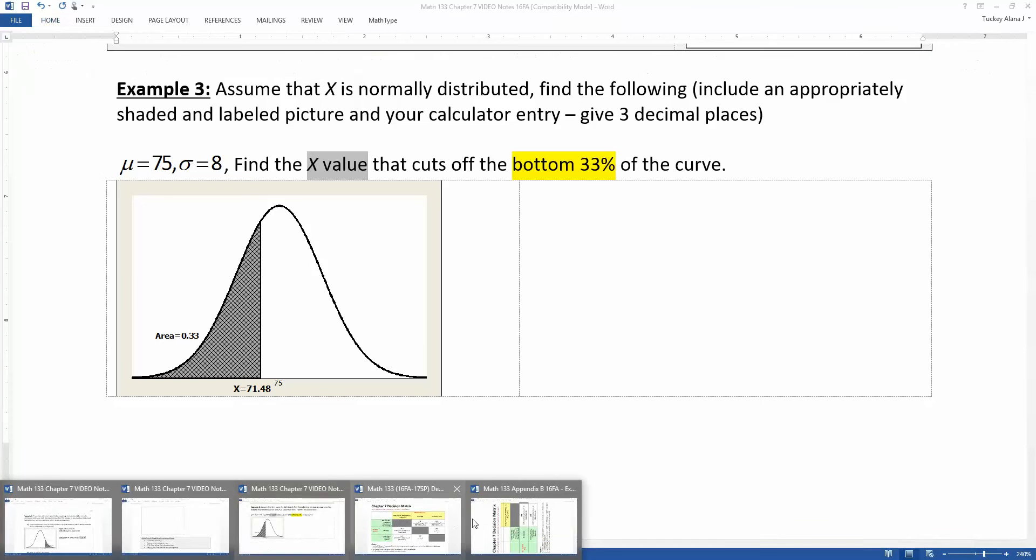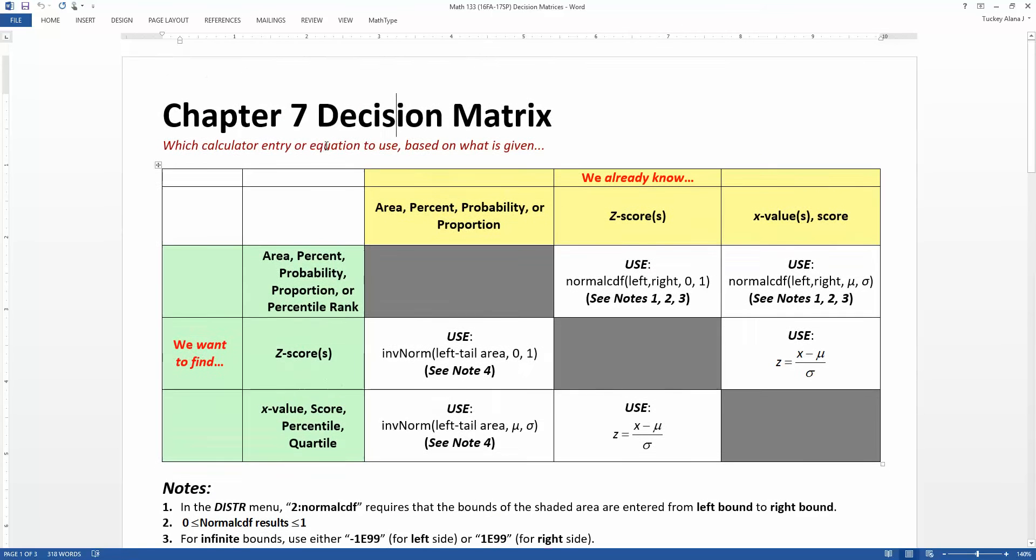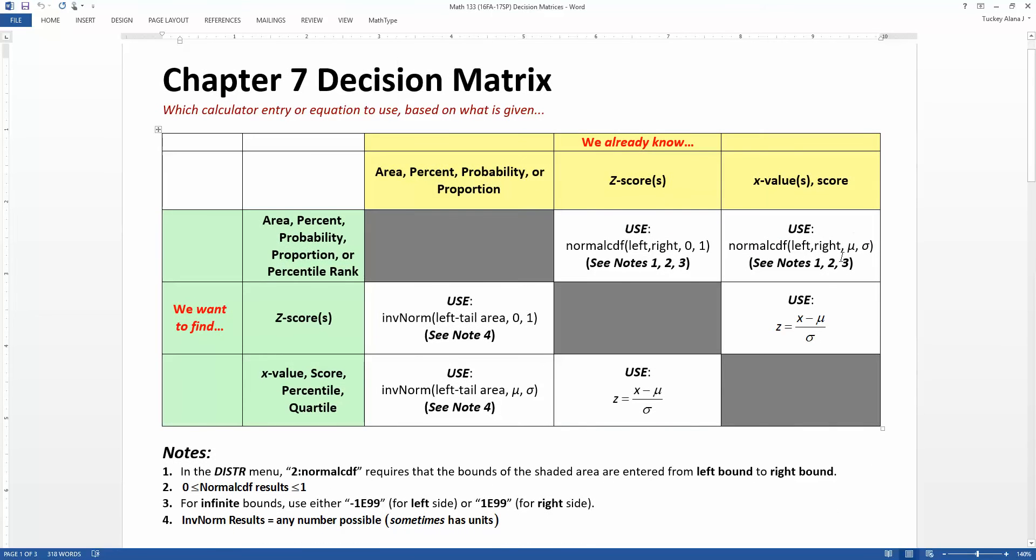Let me pull up the decision matrix here. I added in a couple more notes to make things clearer for everybody. We are looking at, we know the area, the percent because it says the bottom 33%. So we're given a percentage. What we're looking for is the x value that would mark off that bottom 33%. So we know the area percent, we want an x value. That means we're going to use inverse norm, left tail area, comma, mu, comma, sigma.